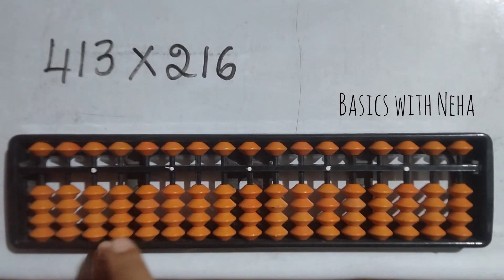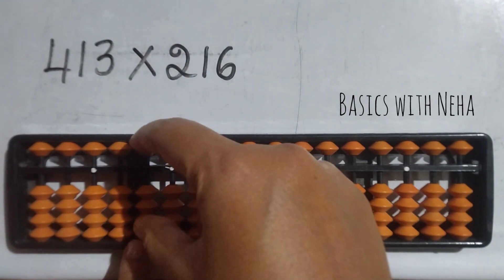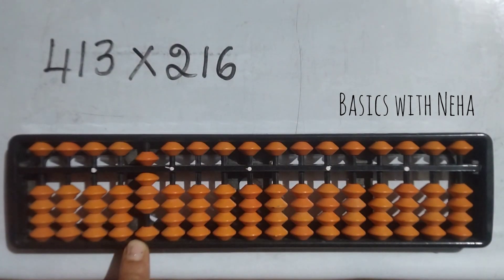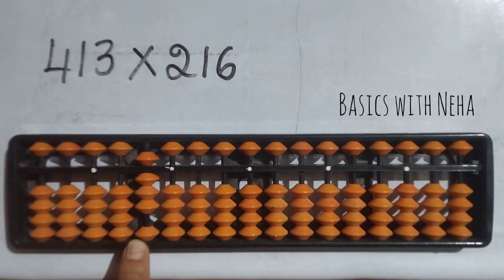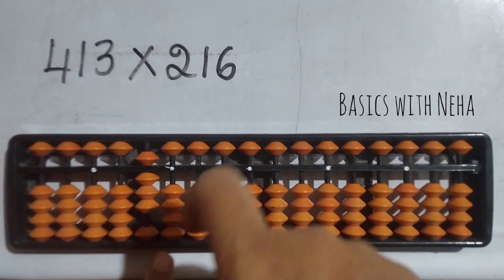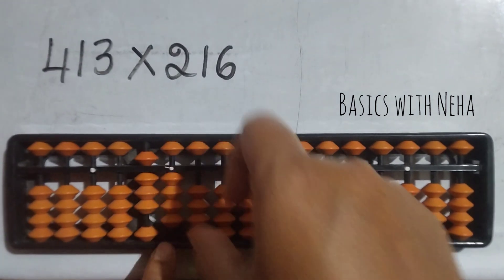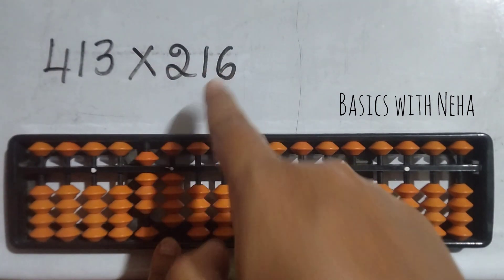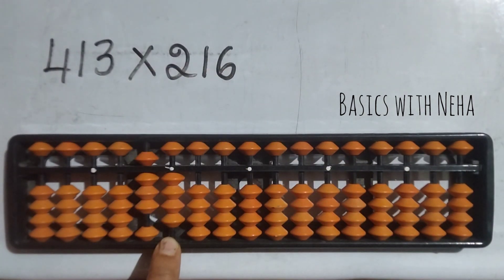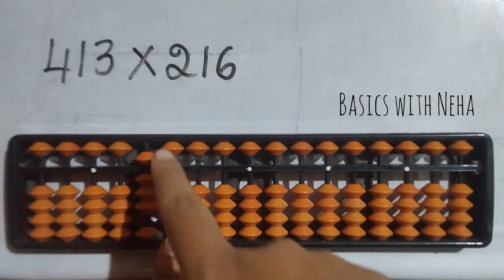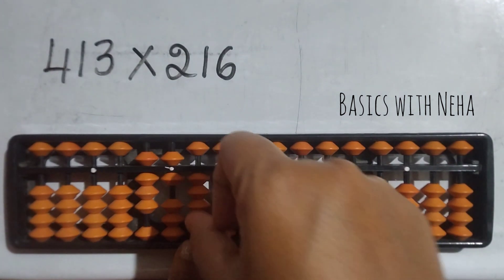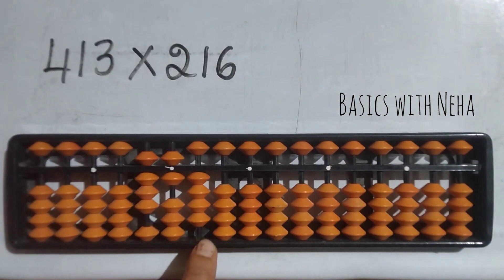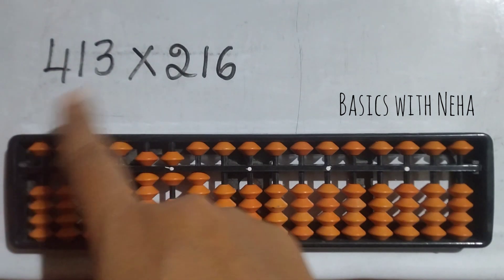4 ones are 4 — again it is zero four. The rod you stop is the rod you start. 4 sixes are 24 — the two should be placed here, which is plus five minus three, and four. Now we are done with 4 into 216.